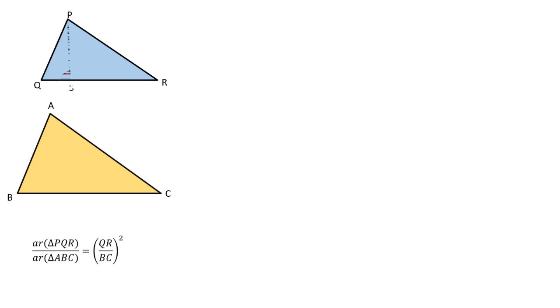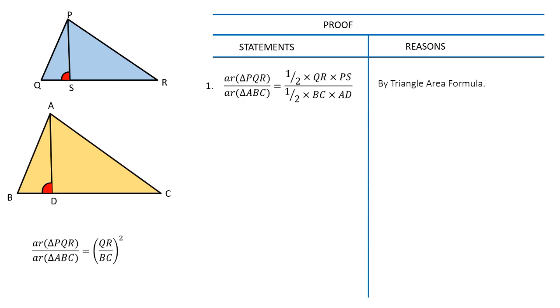To prove it, let us draw a perpendicular from vertex P of triangle PQR to side QR, and another perpendicular from vertex A of triangle ABC to side BC. Now by definition of area of a triangle, the ratio of areas of triangle PQR and triangle ABC is equal to...